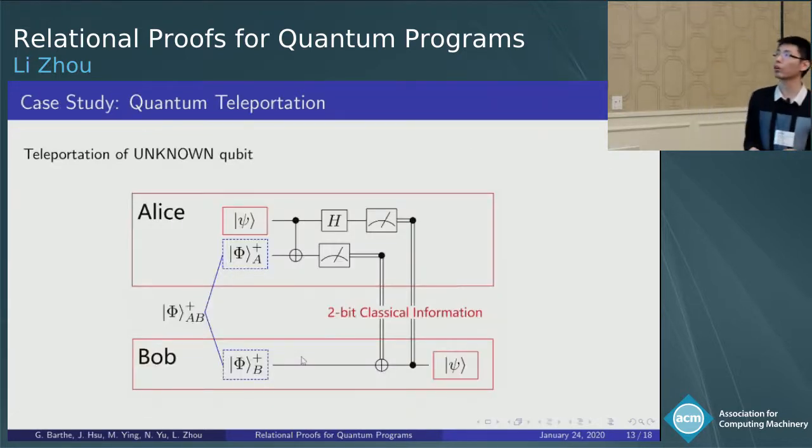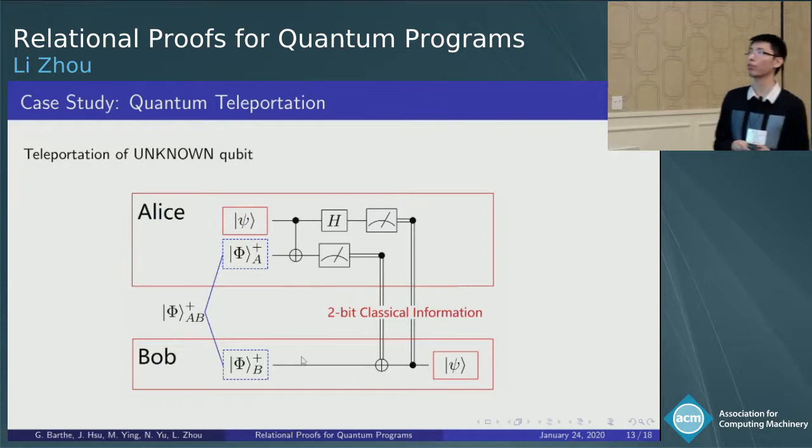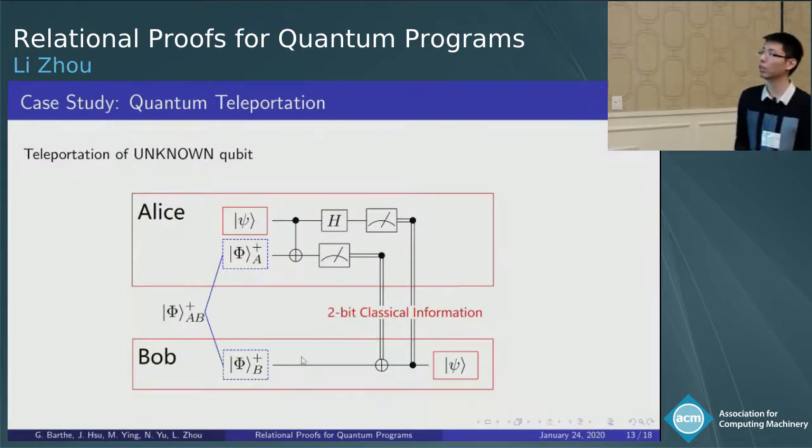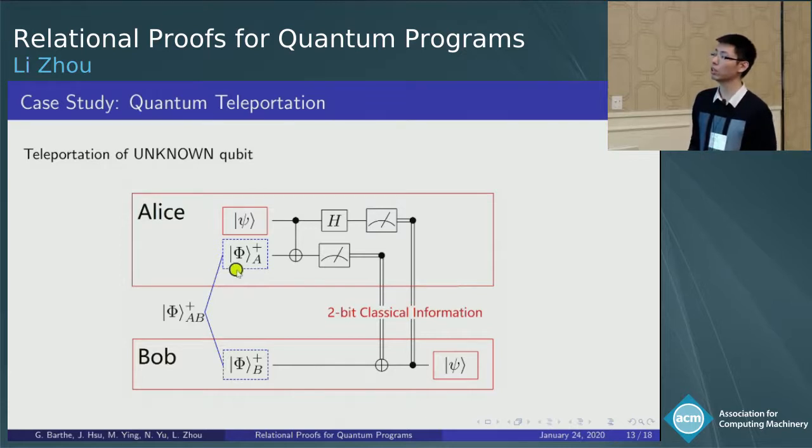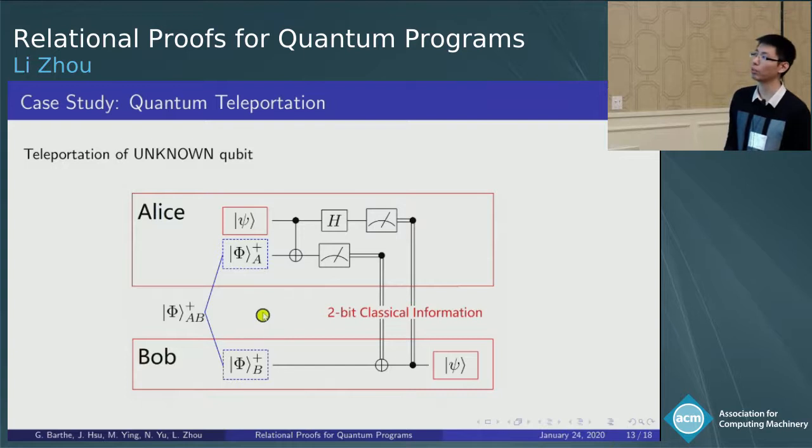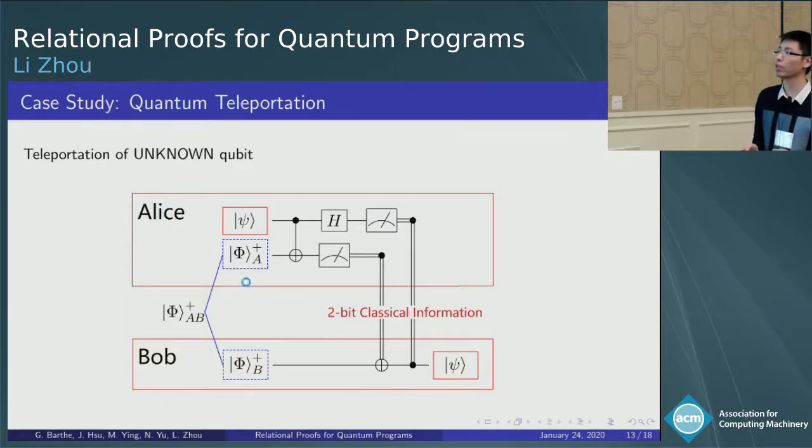Let me show you how our logic can be used to verify robustness of quantum teleportation. Here is the circuit model of quantum teleportation. Before the teleportation, Alice and Bob share an EPR state, which is labeled by blue color here, the Phi AB.